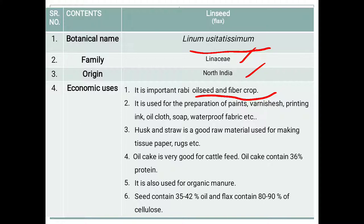Remember that in exams it will often be asked: linseed is used for dual purpose — oilseed and fiber purpose. It is used for the preparation of paints, varnishes, printing ink, oil cloth, soaps, and waterproof fabric. Husk and straw is a good raw material used for making tissue paper and rugs.